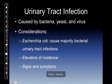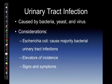Urinary tract infection is caused by bacteria, yeast, and virus. E. coli causes the majority of bacterial urinary tract infections. Elevators of incidence include short urethra, low pH of urine less than 5.6, and indwelling catheters, which can increase the frequency of this. Signs and symptoms include bladder fullness and lower abdominal discomfort.